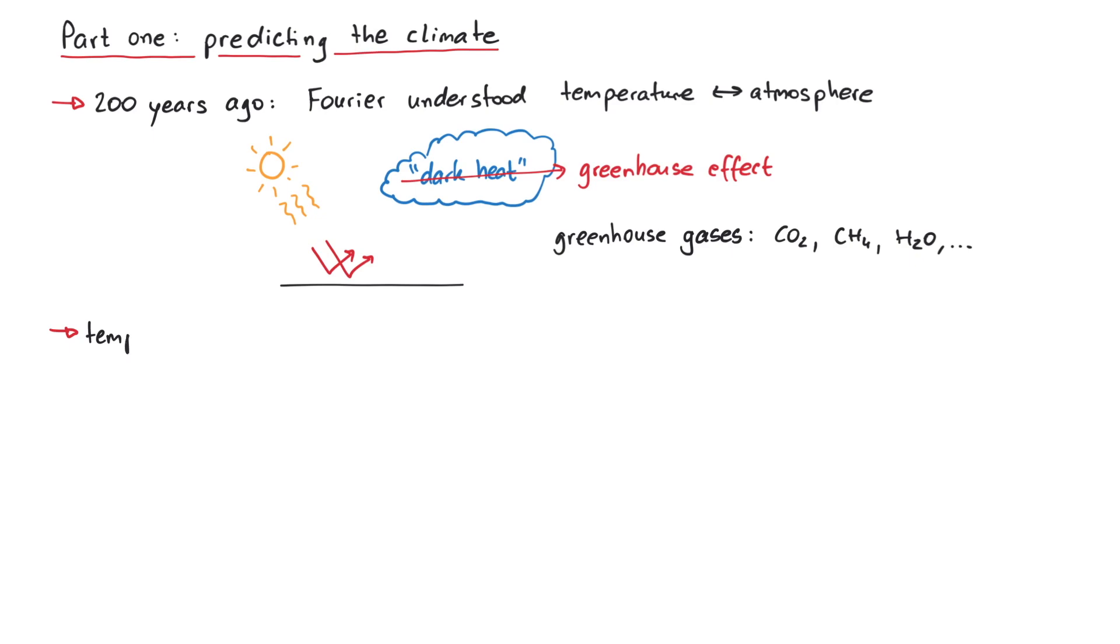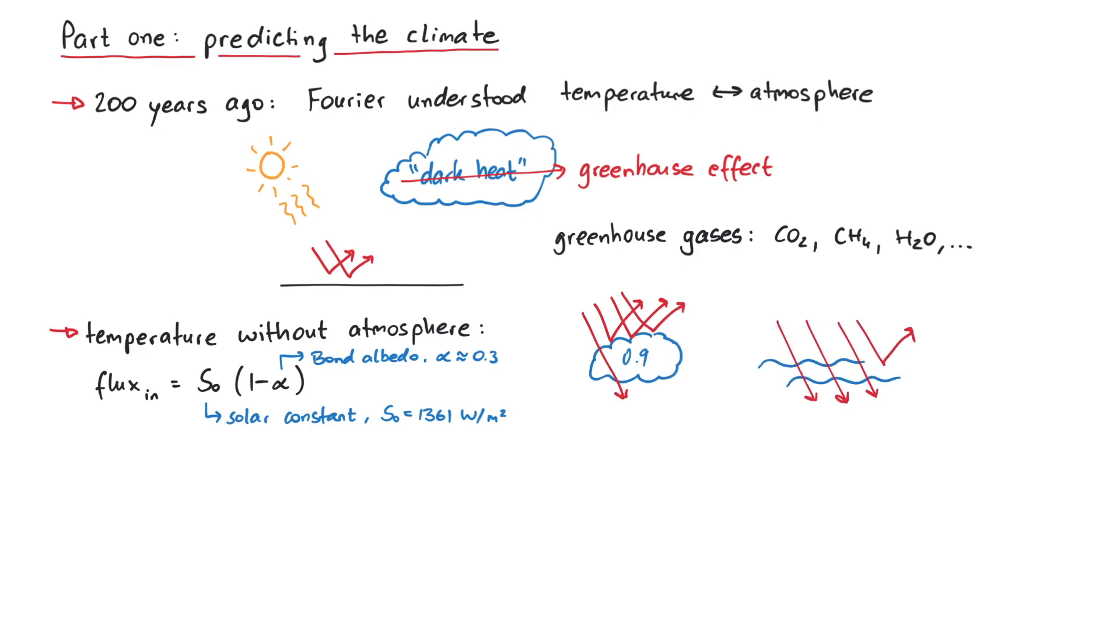We can easily calculate how important the atmosphere is for the temperature on our planet by balancing the incoming and outgoing energy flux, that is, energy per time and area, to determine the temperature. The incoming energy flux is determined by the sun via the solar constant S0, and the surface bond-albedo alpha, which states how reflective our planet's surface is. Satellite measurements give us a value of around 0.3, which is averaged between the 0.9 of energy-reflective clouds and 0.2 of energy-absorbing oceans.